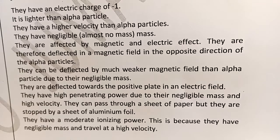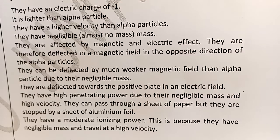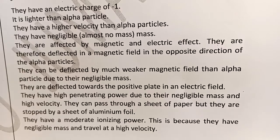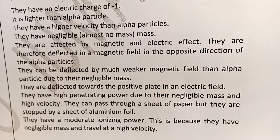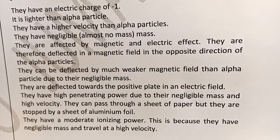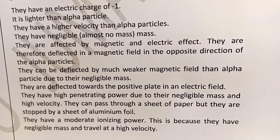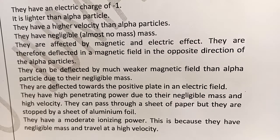To summarize: alpha particles cannot penetrate a piece of paper, but beta particles can penetrate paper and are stopped by aluminium foil. Beta particles have moderate ionizing power because they have negligible mass and travel at relatively high velocity. Their charge is negative one compared to alpha's positive two, so their ionization effect on other particles is lower.